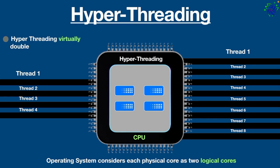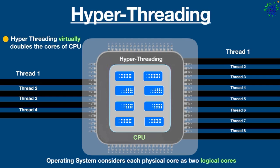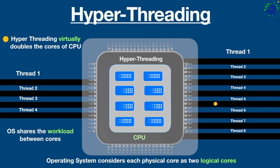Just as four hands can do more work than two hands, hyper-threading virtually doubles the cores of the CPU. So this quad-core processor will act as if it has eight cores and process information faster compared to a quad-core without hyper-threading. The operating system considers each physical core as two logical cores, shares the workload between them, and each logical core can be stopped, interrupted, or directed to execute a specific thread independently of the other logical cores that share the same physical core.